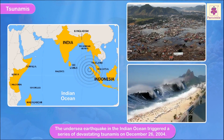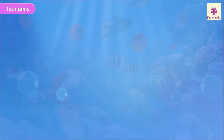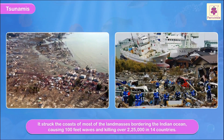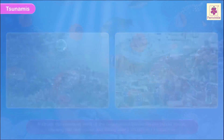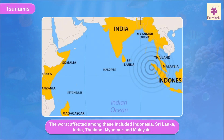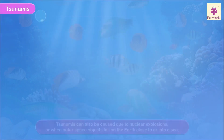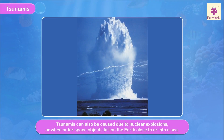The undersea earthquake in the Indian Ocean triggered a series of devastating tsunamis on December 26th, 2004. It struck the coasts of most of the land masses bordering the Indian Ocean, causing 100-foot waves and killing over 2 lakh 25,000 people in 14 countries. The worst affected areas included Indonesia, Sri Lanka, India, Thailand, Myanmar, and Malaysia. Tsunamis can also be caused due to nuclear explosions.